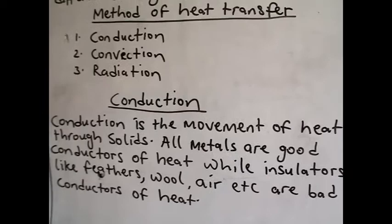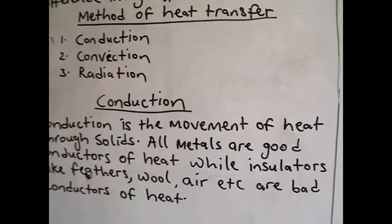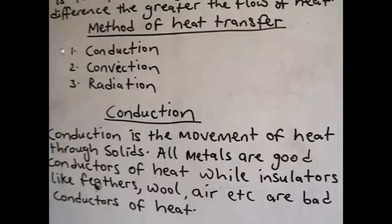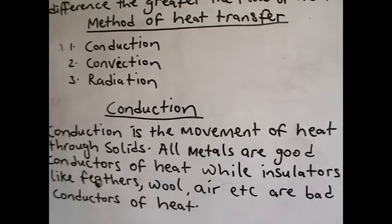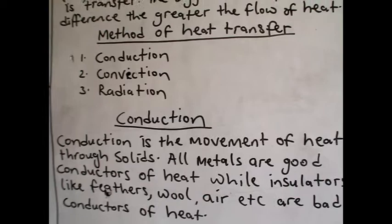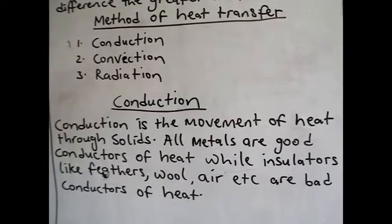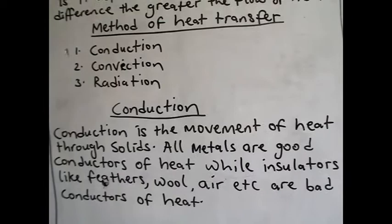As long as we have conductors, we equally have insulators. Conductors are objects that can transfer heat from one object to the other, while insulators are those ones that do not transfer heat. Examples of insulators are feathers, wood, and air. They are poor conductors, so we refer to them as insulators. They cannot convert heat from one form to the other.